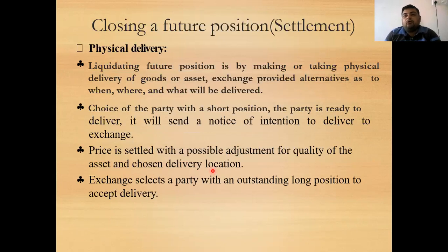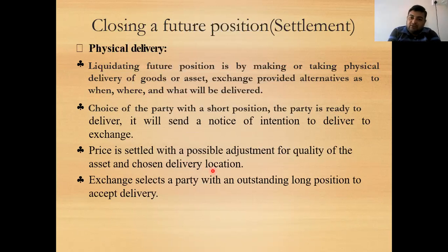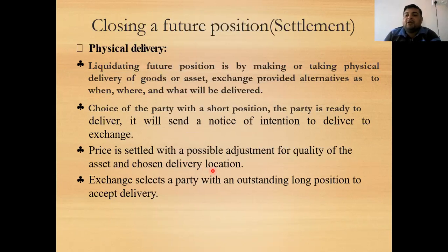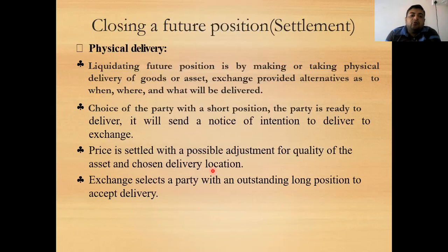The first and most popular method of settling a futures contract is physical delivery — delivering the goods physically to the other party or transferring the warehouse receipt. For example, if you entered into 10 contracts of wheat at ₹23,000 per ton, on the day of settlement you either do physical delivery or virtual delivery by transferring the warehouse receipt to the other party. When commodities are kept in a warehouse, a warehouse receipt is issued, and this plays a very important role in the physical delivery and settlement of futures contracts.